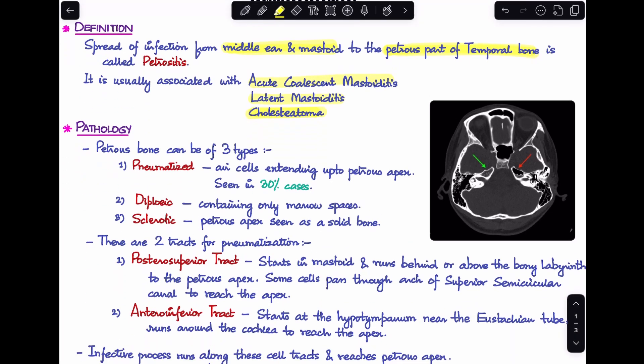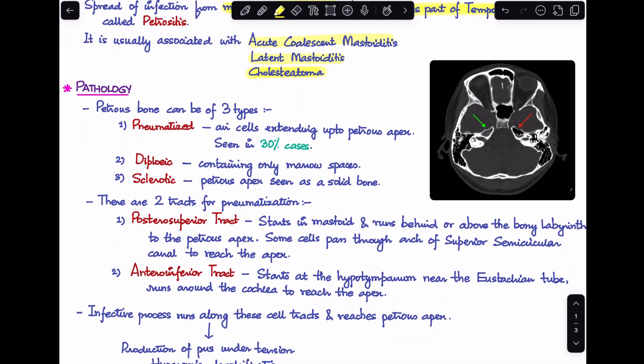Now coming to the pathology of it, petrous bone first of all can undergo three different types of pneumatization, just like the mastoid bone does. It can either be pneumatized, diploic, or sclerotic. Pneumatized is when the air cells are seen to extend up to the petrous apex. This is seen in about 30 percent of cases. In pneumatized petrous apex we have seen that it has actually more chances of developing petrositis. Diploic is when it contains only marrow spaces, and sclerotic is when the petrous apex is seen as a solid bone.